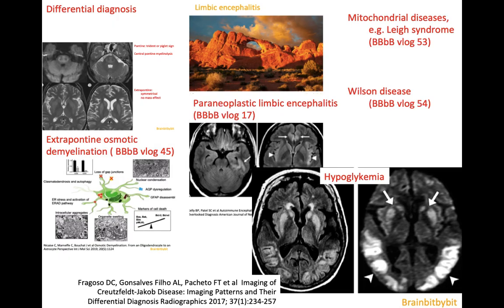In the differential diagnosis you can think of the diseases that brought us here, such as Wilson's disease and mitochondrial diseases such as Leigh syndrome. You can think of extrapontine osmotic demyelination with high signal in the basal ganglia. If there's cortical involvement in the sporadic variant, you can think of paraneoplastic limbic encephalitis. If there's both cortical and basal ganglia involvement, consider hypoglycemia in adults — and we'll look at that in the next vlog.